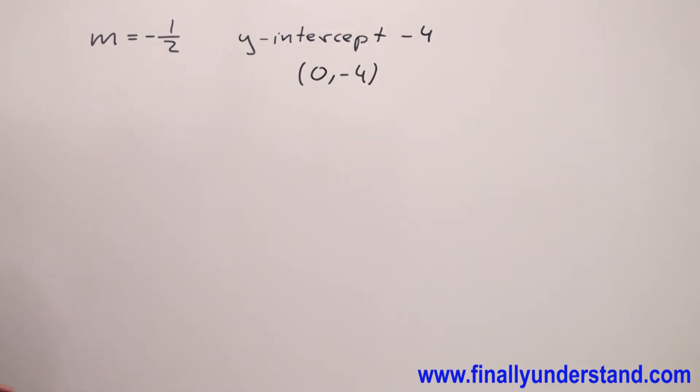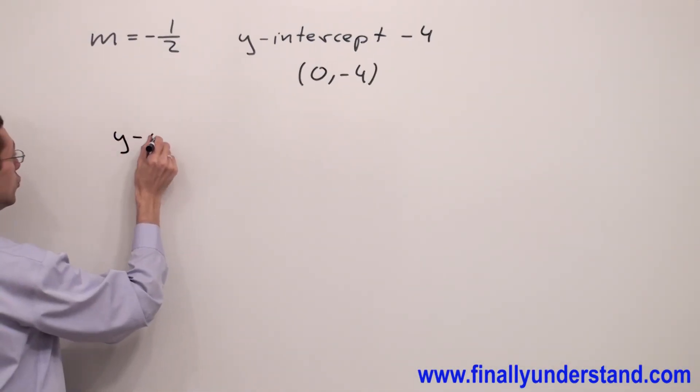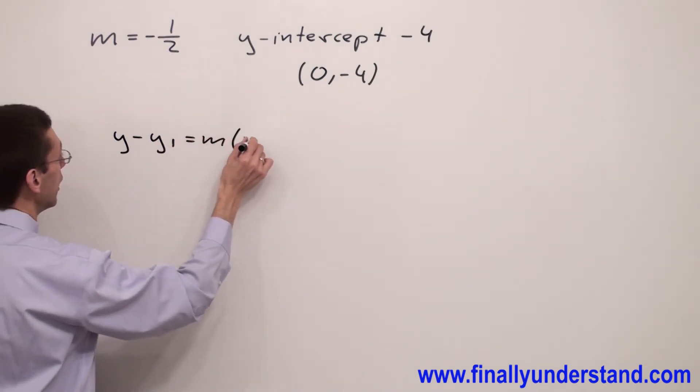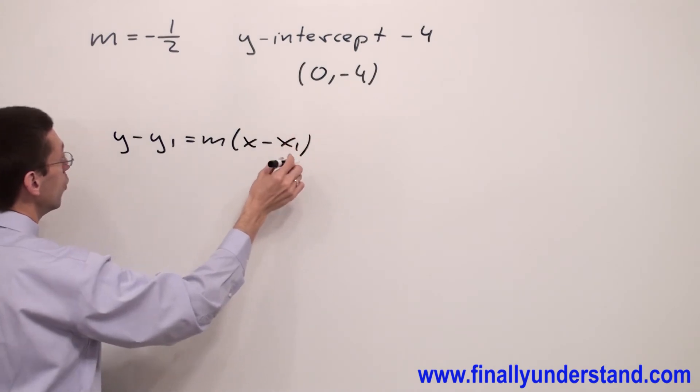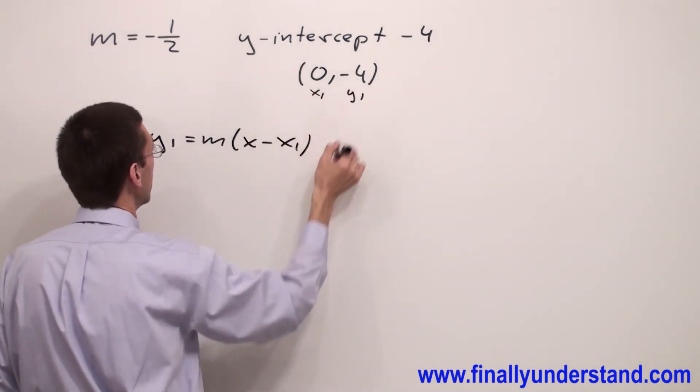Now we can go straight to the point slope form: y minus y1 equals m times x minus x1, where this is my x1 and this is my y1.